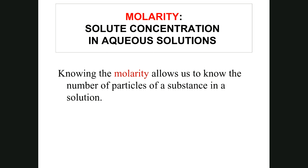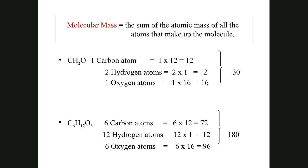Molecular mass is the sum of the atomic masses of all atoms in a molecule. For CH₂O: one carbon (mass 12) + two hydrogens (2 × 1 = 2) + one oxygen (mass 16) = a molecular mass of 30. The atomic mass is the number shown below the element on the periodic table — representing the number of protons and neutrons.